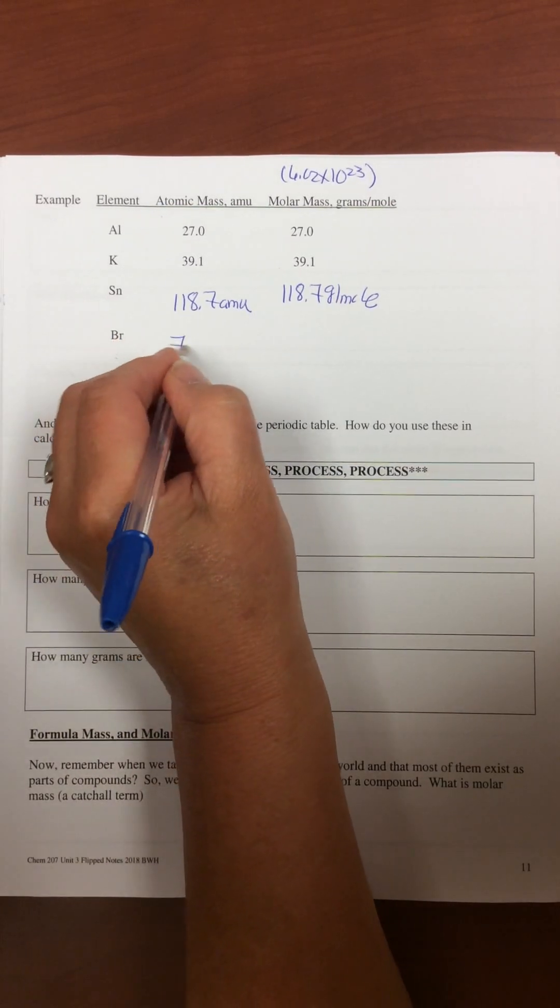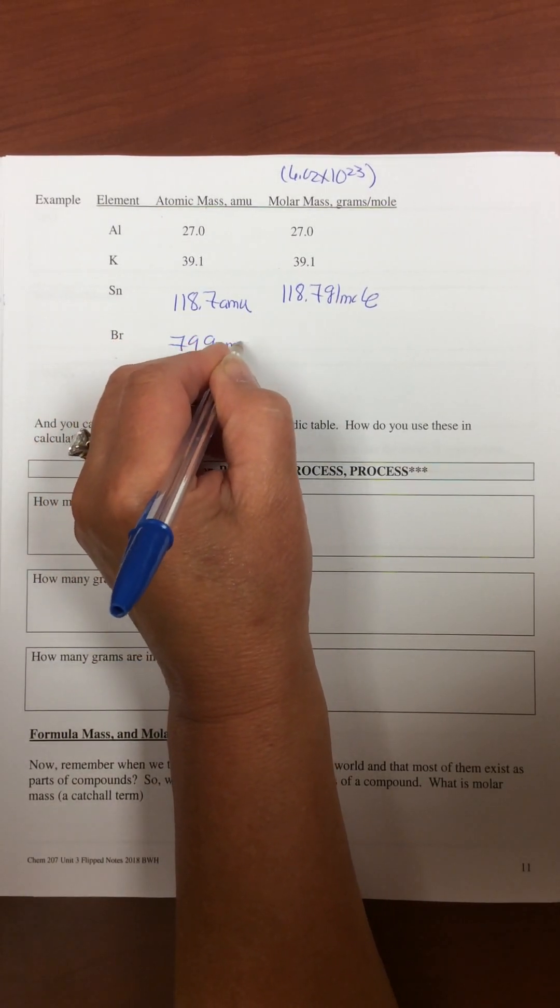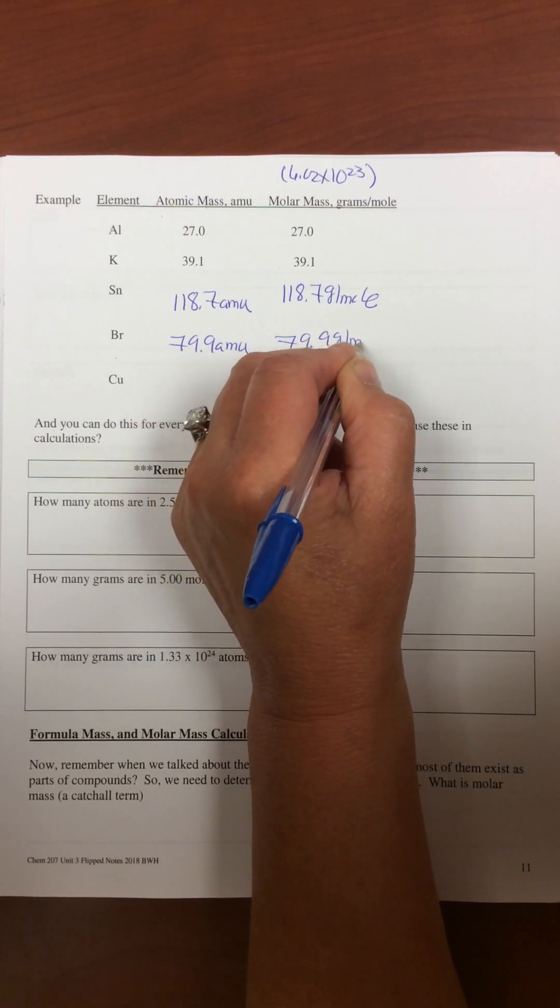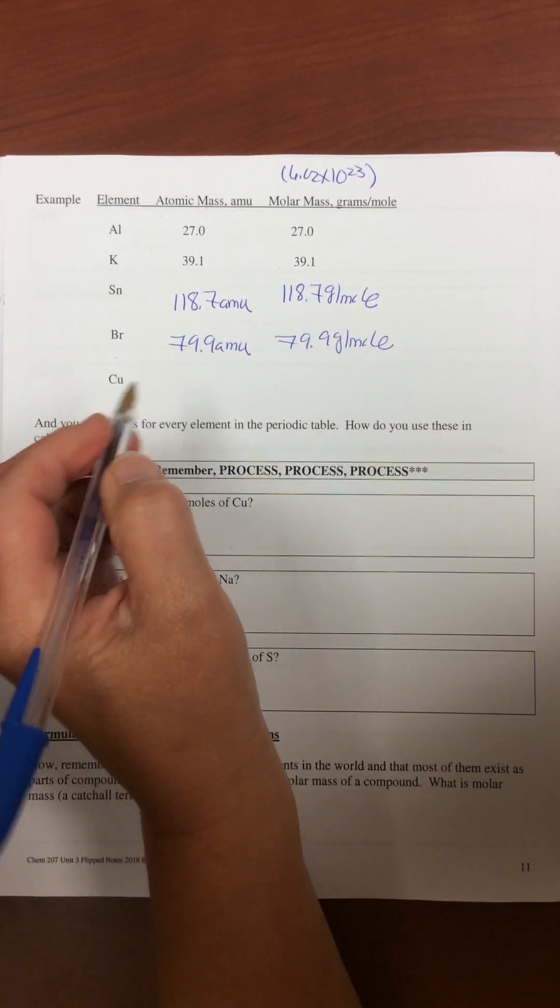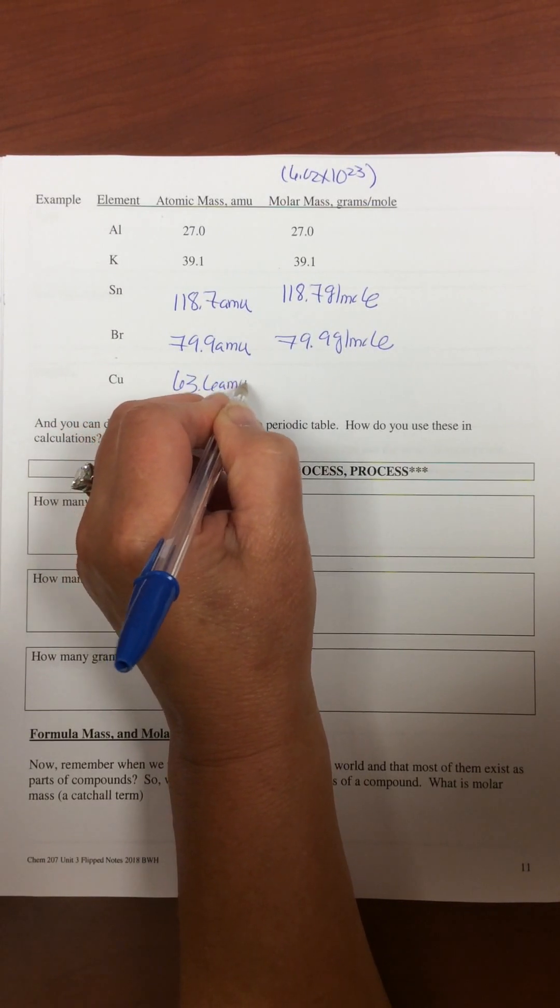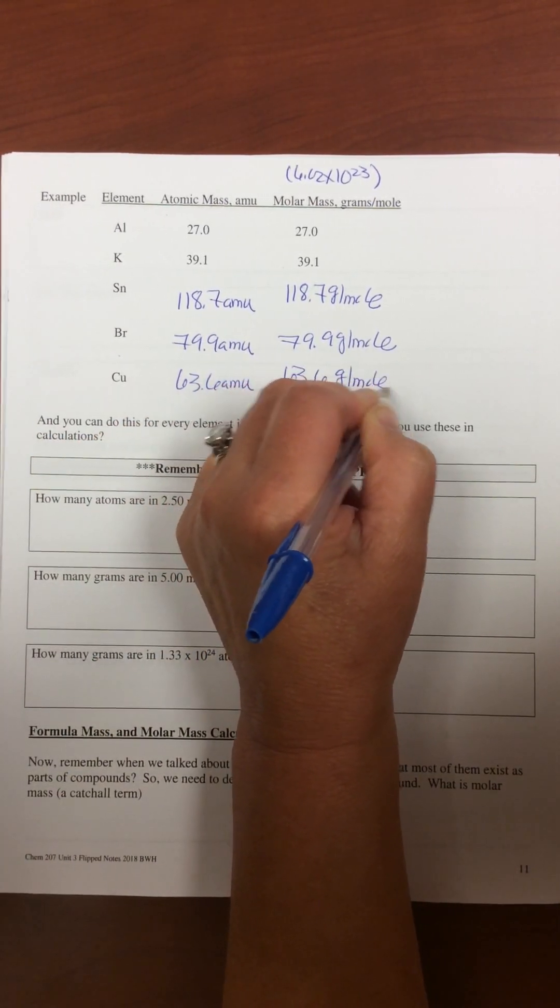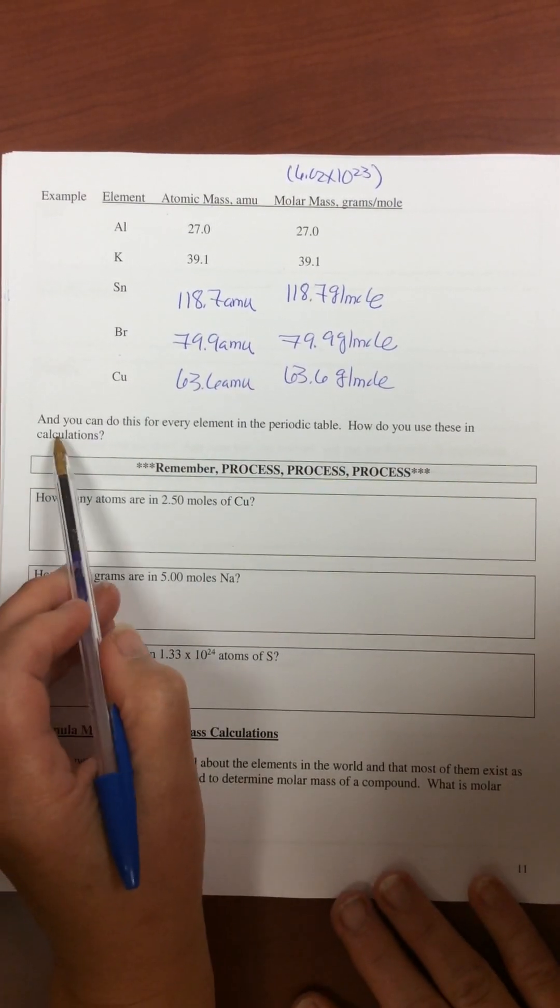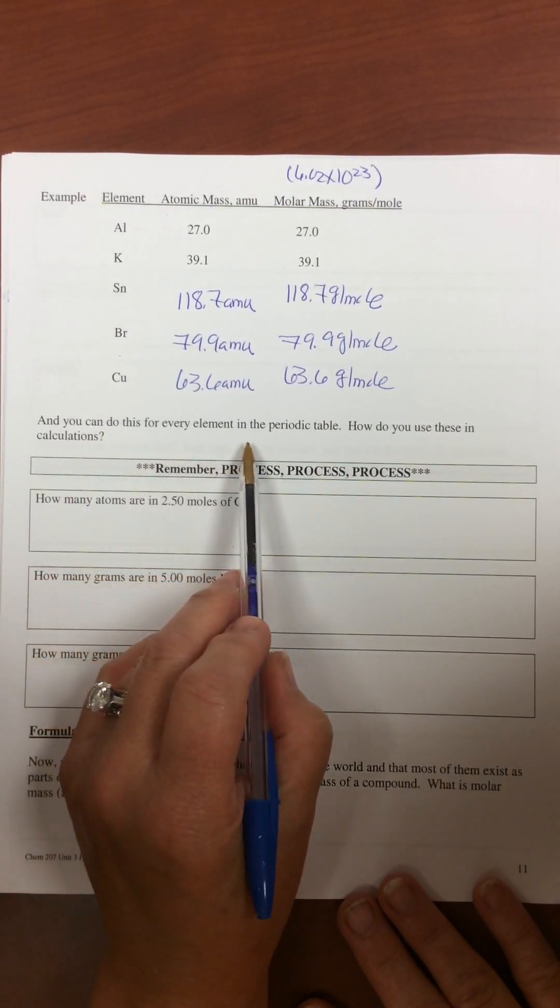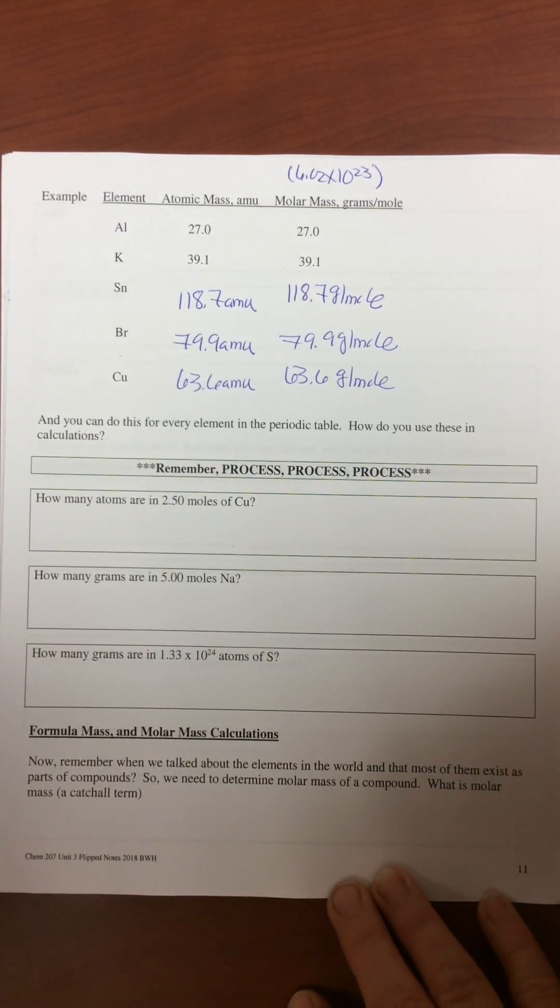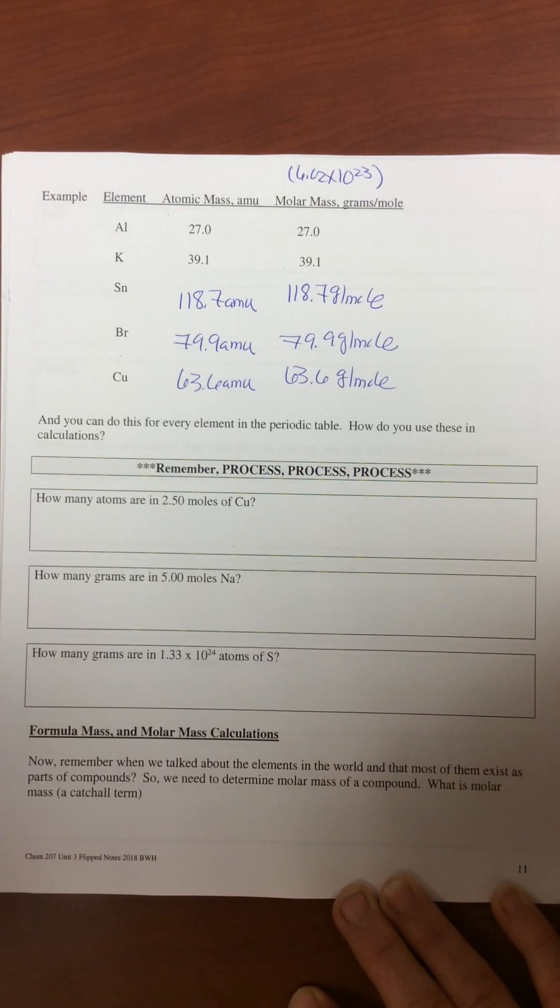Bromine, 79.9 amu, 79.9 grams per mole. Copper, 63.6 amu, 63.6 grams per mole. Now you can do this for every element in the periodic table.